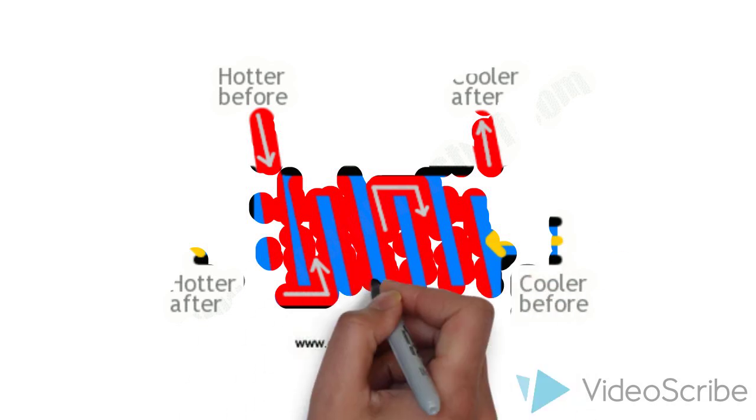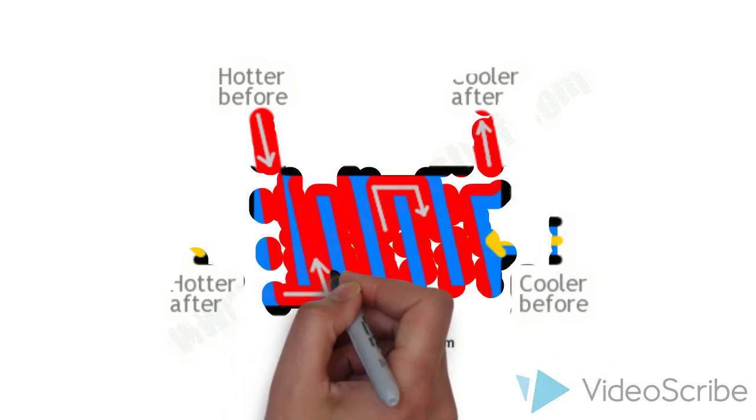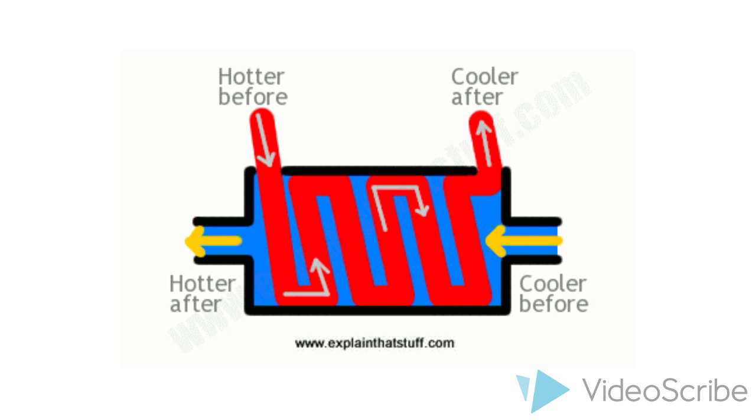Their purpose is to transfer heat from one fluid to another without having direct contact. The hot fluid flows through a tube that is bent inside a shell where cool fluid flows through. It is essential that the two fluids do not mix.